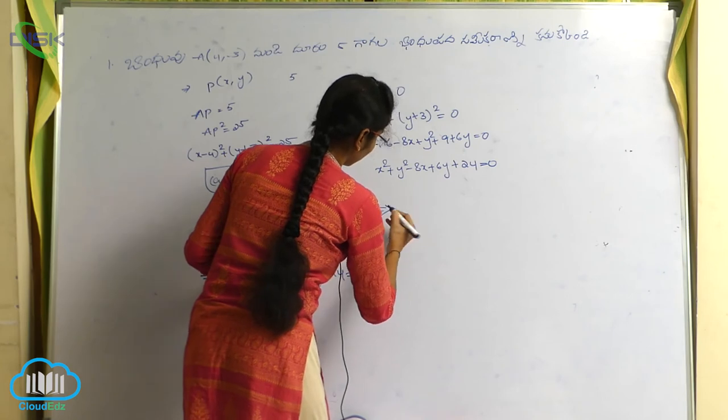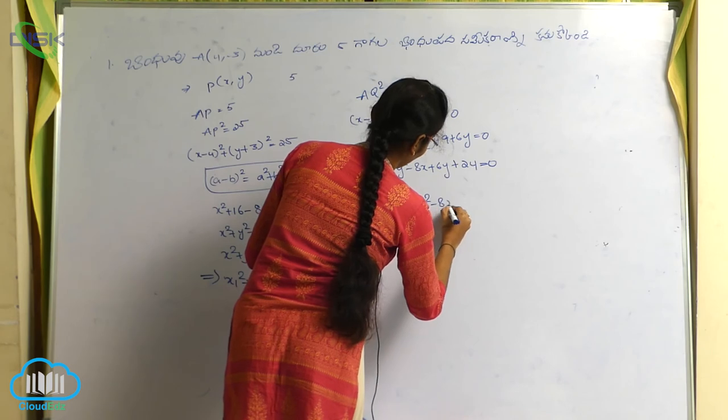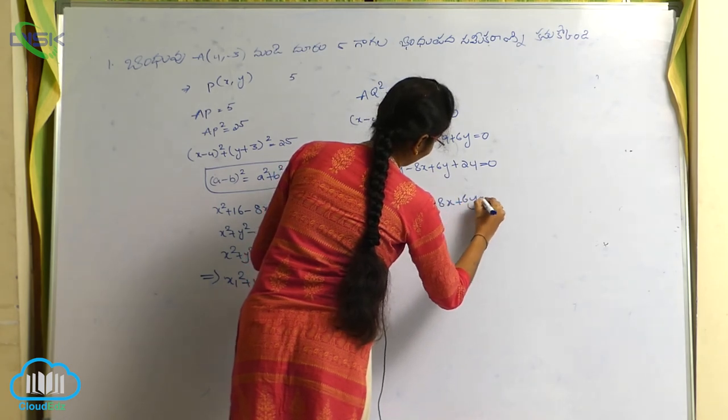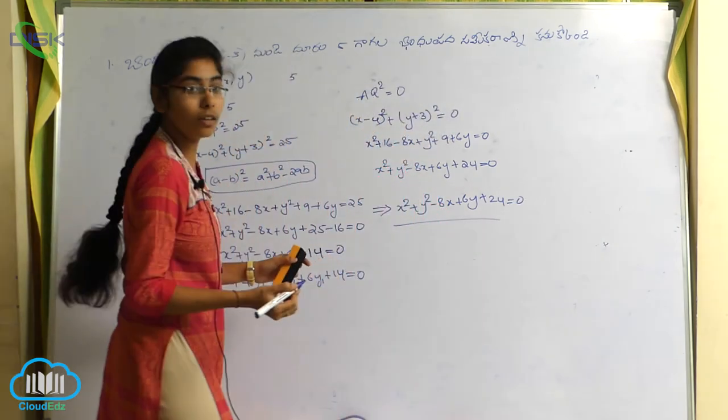Now, we will find square here, x² plus y² minus 8x plus 6y plus 24 is equal to 0. This is the equation.